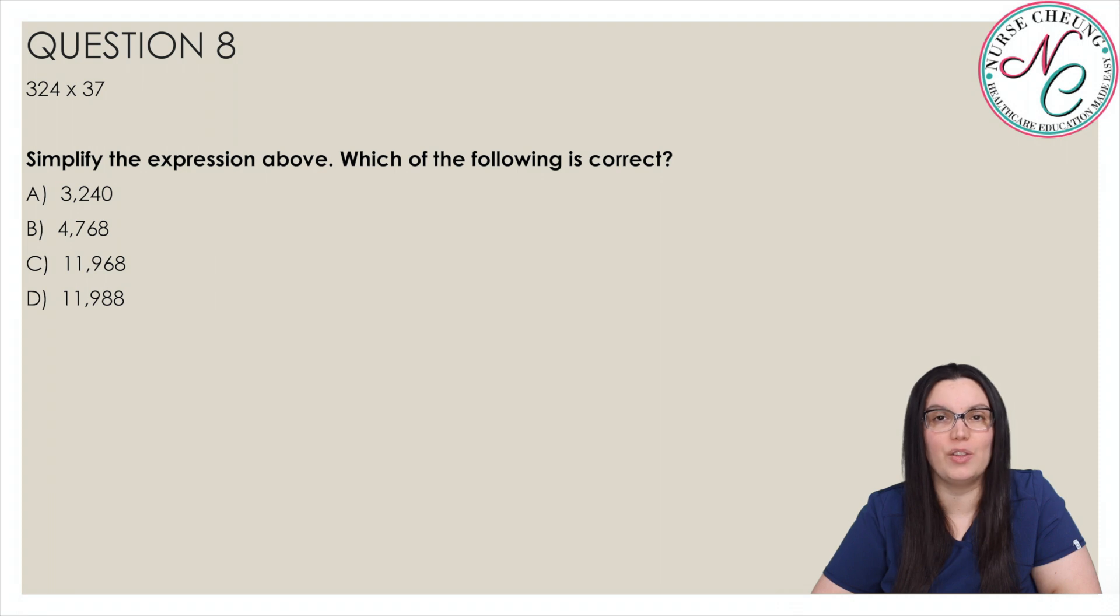324 times 37. Simplify the expression above. Which of the following is correct? Is it A, 3,240, B, 4,768, C, 11,968, D, 11,988? And the correct answer is D, 11,988.